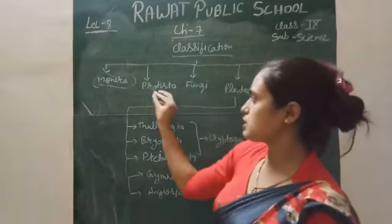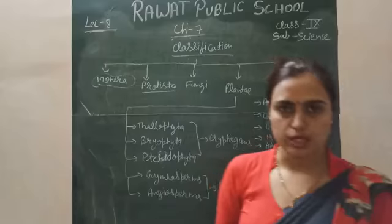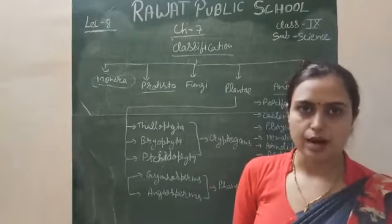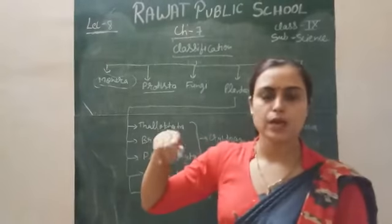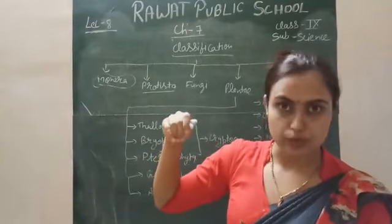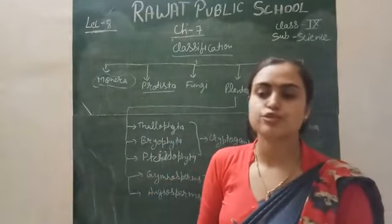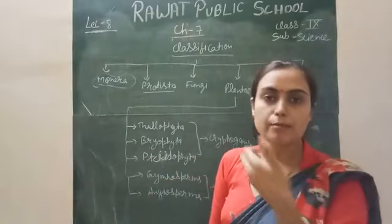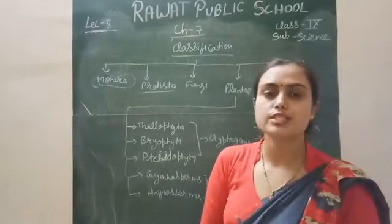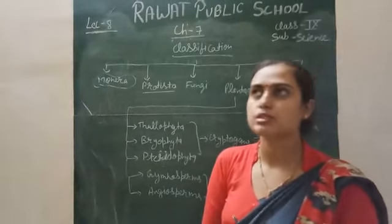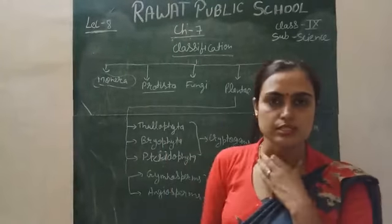Next is Protista. Protista is the kingdom where unicellular eukaryotes are present. Eukaryotes means organisms whose nucleus is of the true type — nuclear membrane is present in their nucleus. All the unicellular protists — diatoms, dinoflagellates, and Euglena — are present in the Protista.